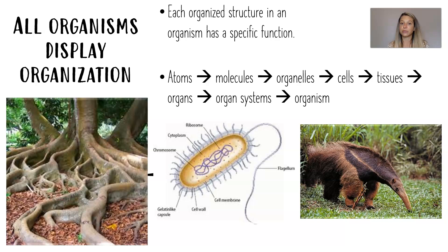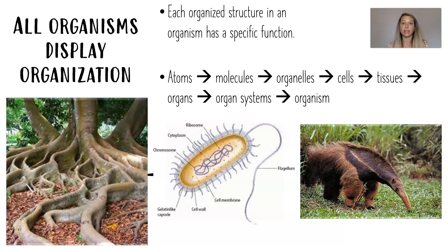Our next characteristic of life is that all organisms display organization. An organism is a system made up of working parts — that's a unifying theme in biology. Each organized structure in an organism has a specific function. Every structure in a single-cell bacterium has a specific function, and every cell and tissue within a multicellular organism has a specific function. We're going to work our way up from the smallest makeup of an organism all the way up to the individual organism itself.